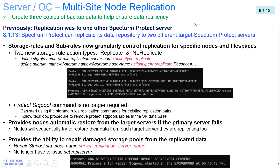He will replicate his server 1 out to server 2 and server 3. He'll be setting up storage rules and sub-rules to replicate different nodes and different file spaces to those servers. He'll also show you how to run a repair after he has purposely damaged his primary storage pool. So with that, I'll turn it over to Jonathan.